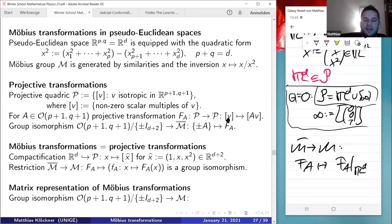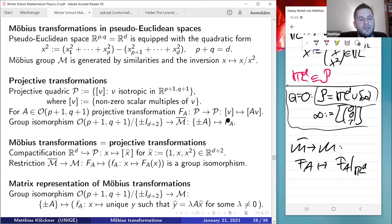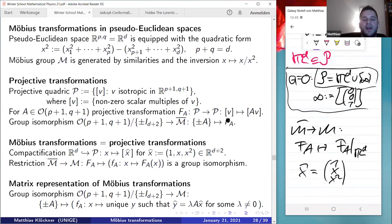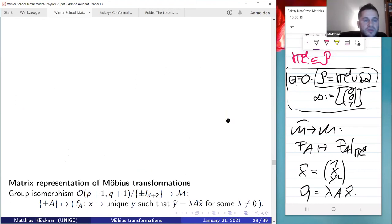It maps any x to the unique y, such that x̂ and ŷ—remember x̂ is the vector (1, x, x²)—that x̂ and ŷ, the image, have this linear algebraic relationship: ŷ = λAx̂ for some scalar lambda. And this now has an easy application because what Ahlfors and others tried with the Clifford numbers representation of Möbius transformations now becomes very easy, namely to compute the fixed points. So let us just remember the last section.